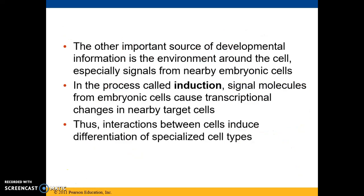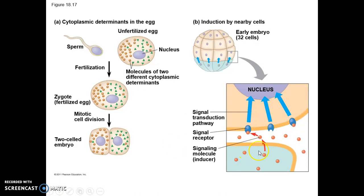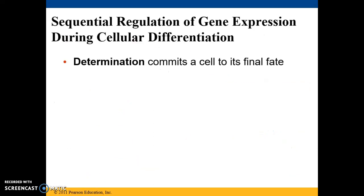Substances surrounding the cell can also have profound impact on gene regulation. In the process called induction, signal molecules from embryonic cells can cause transcriptional changes in nearby cells, and interactions between neighboring cells can affect differentiation. Scientists coined the term determination to refer to the events that lead to observable differentiation. Once a cell has undergone determination, it is irreversibly committed to its final fate — even if placed in another part of the embryo, it will still become the cell type it was fated to become.